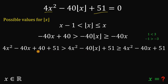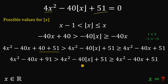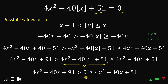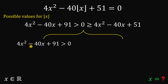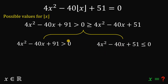Let's simplify: combining 40 plus 51 gives 91, and the middle term 4x squared minus 40 times the floor value of x plus 51 is given as equal to 0. Focusing on this result, we have two possible cases. The first is 4x squared minus 40x plus 91 is greater than 0. The other is 4x squared minus 40x plus 51 is less than or equal to 0. We will solve these two inequalities to find the possible values for the floor value of x.